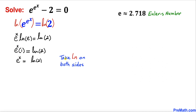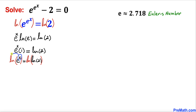Now let's go ahead and take a natural log on both sides once again. So we have natural log of e to the power of x equals natural log of natural log of 2. According to the power rule, we can move this x all the way to the front, so this can be written as x times natural log of e equals natural log of natural log of 2 on the right hand side.